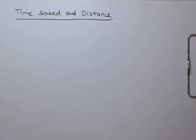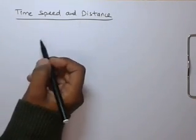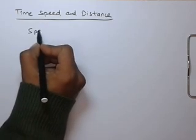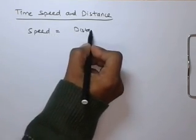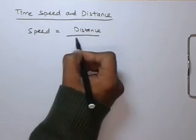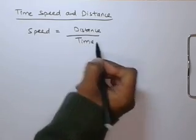Speed is nothing but the rate at which distance is covered. Thus the basic formula of time, speed and distance can be written as: speed equals distance that is covered upon time, or the time taken to cover the distance.